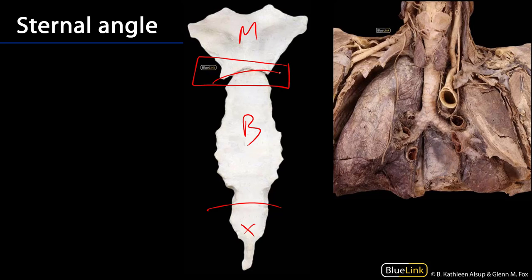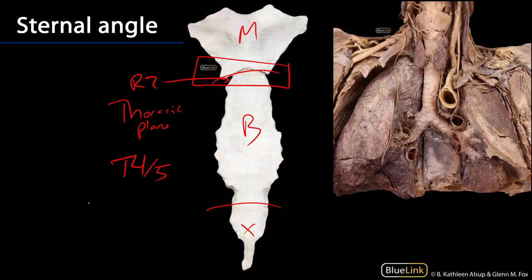This is a palpable landmark. Recall that the second ribs articulate at this point and they are setting up the thoracic plane, which runs posteriorly from this sternal angle back to the intervertebral disc between T4 and T5.